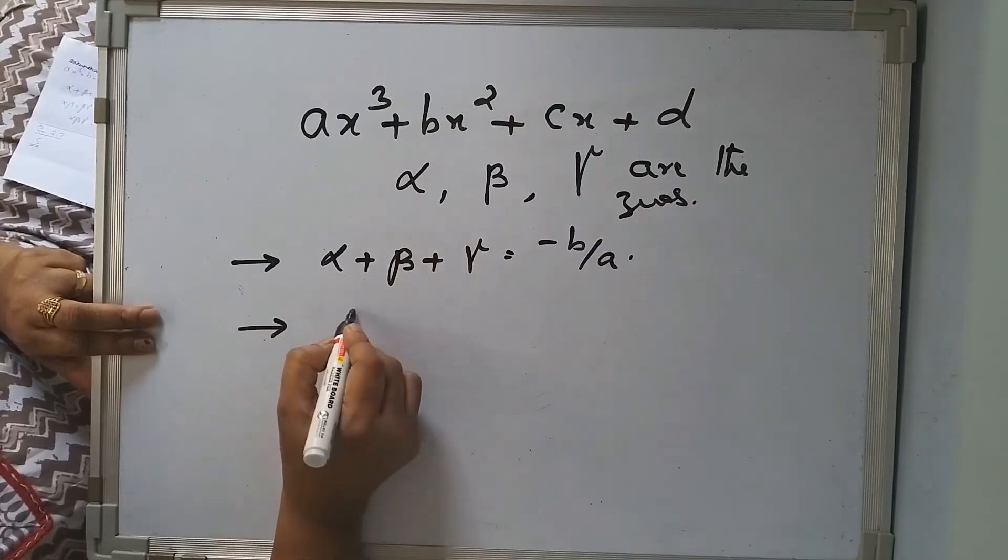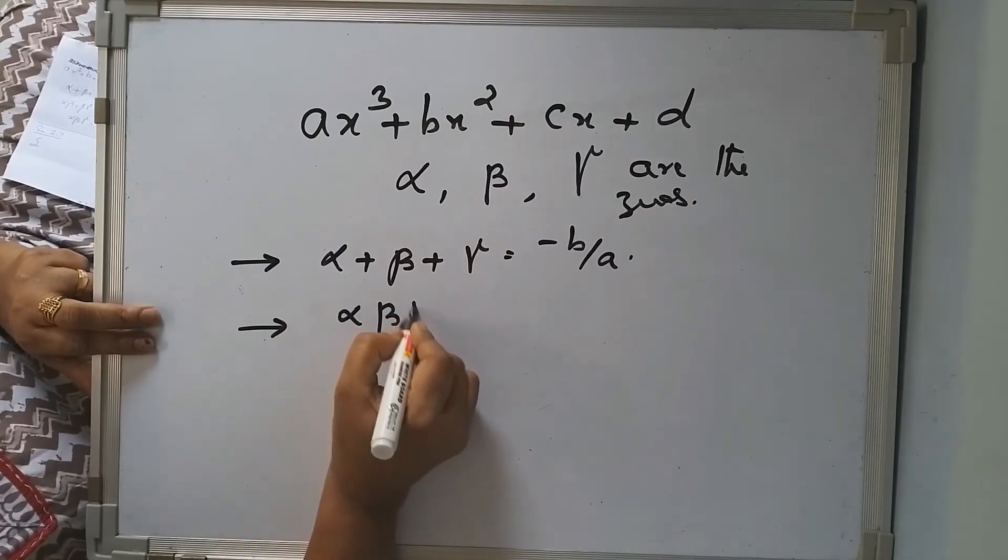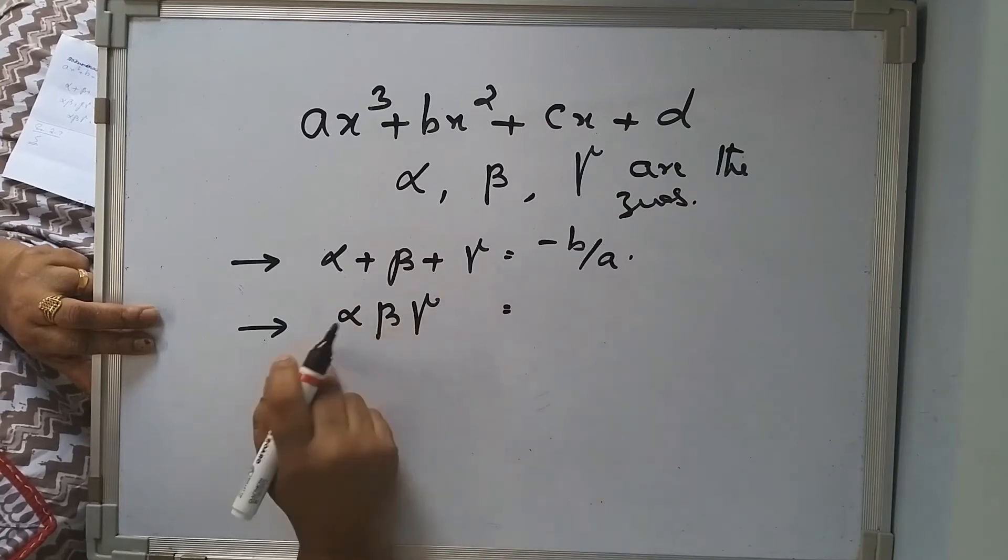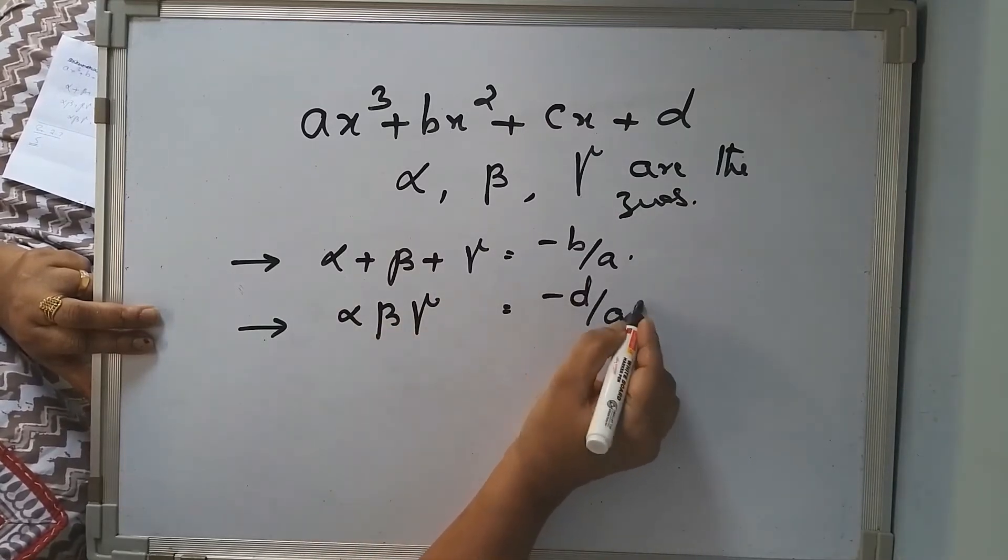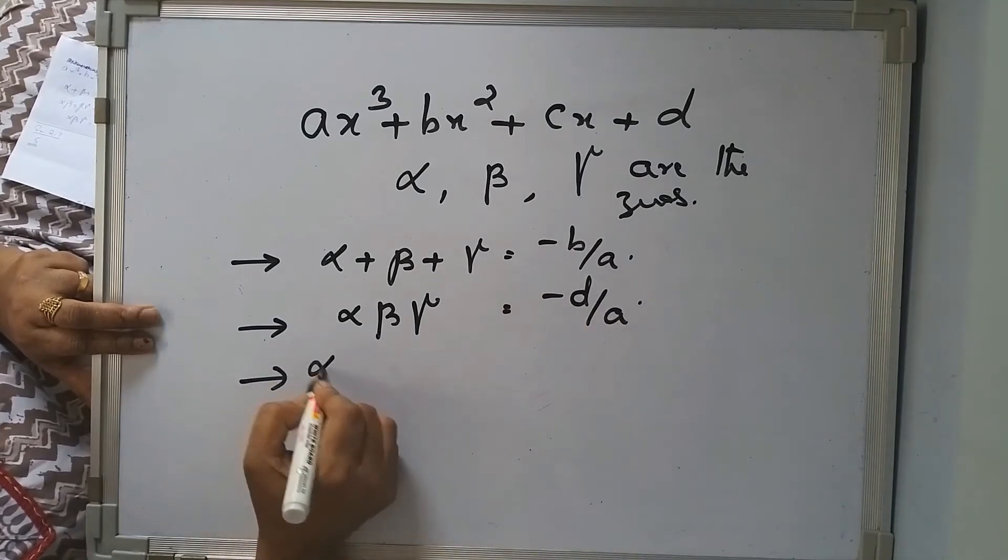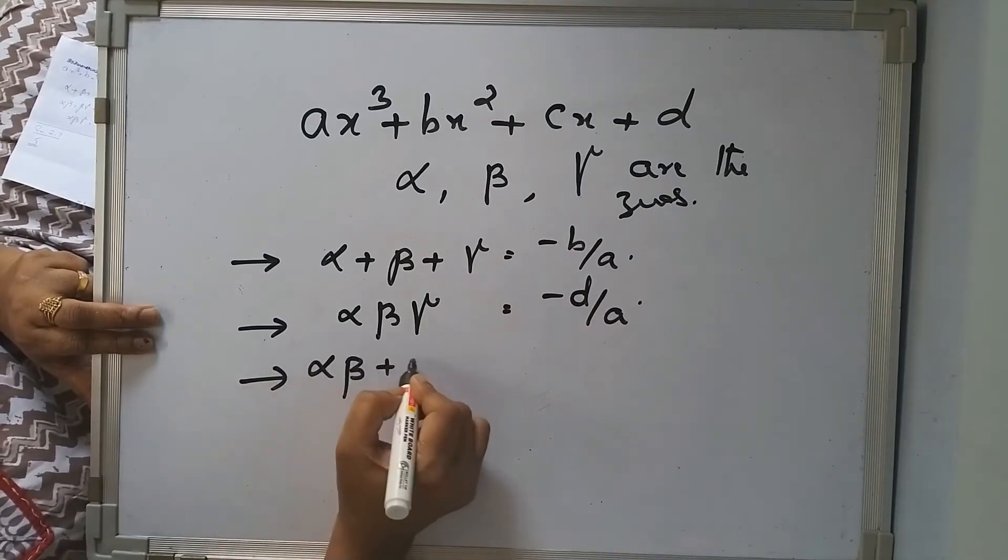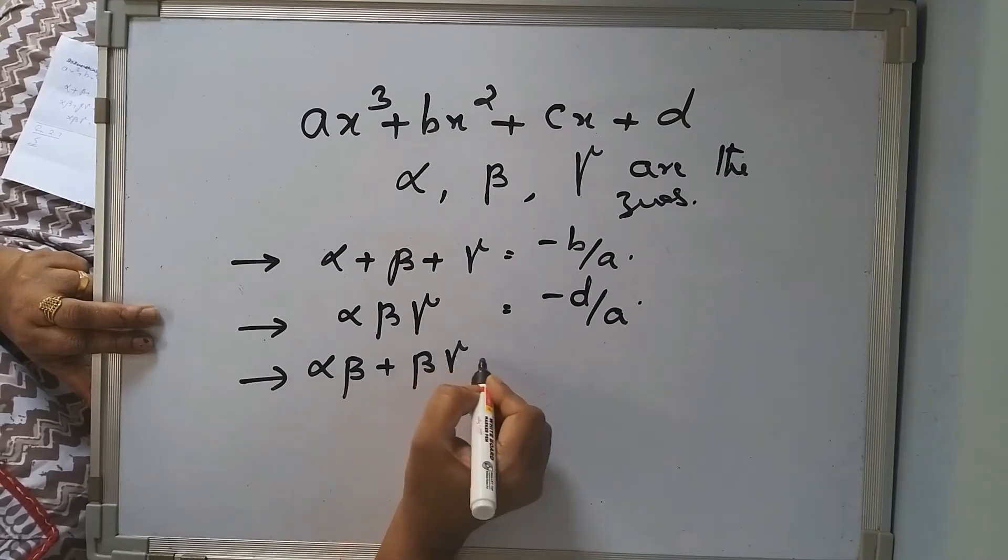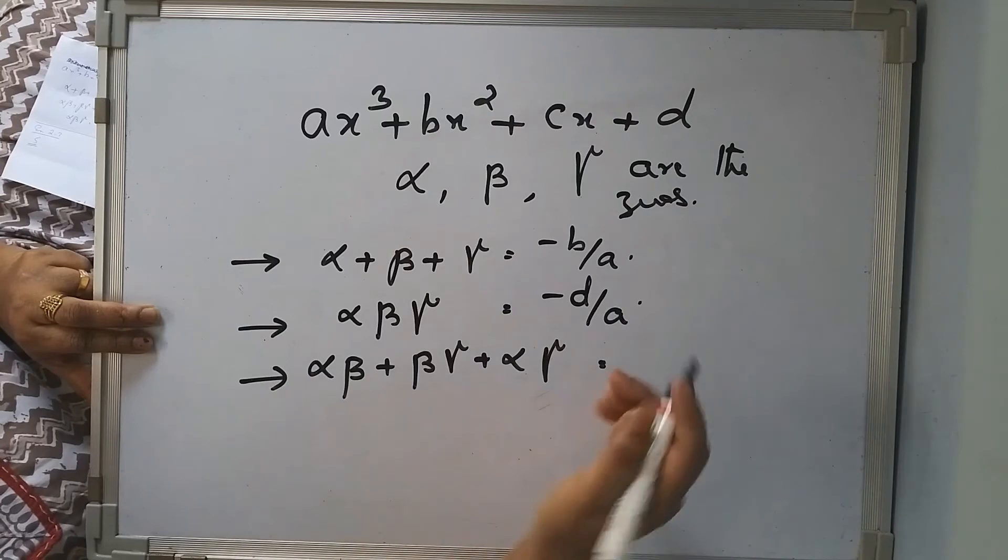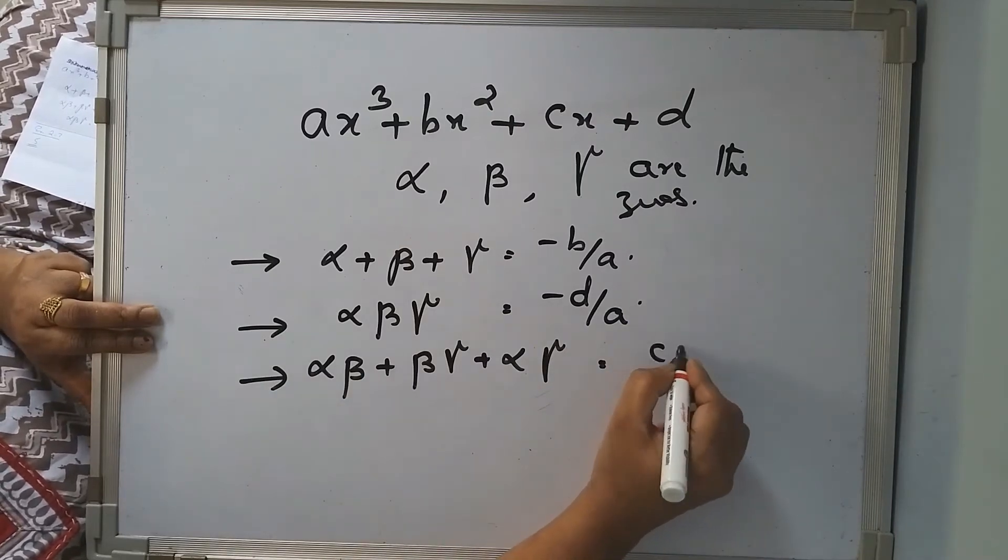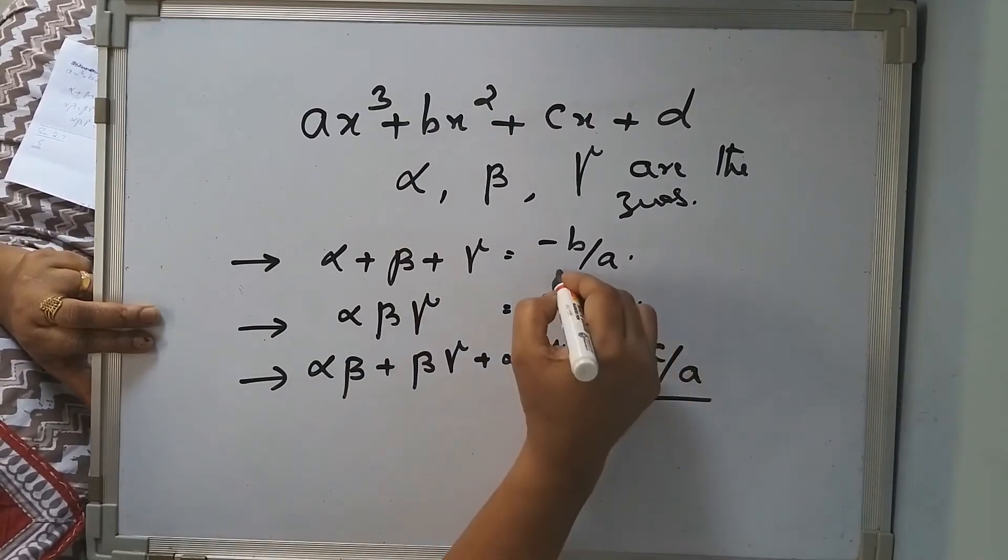Next is alpha, beta, gamma, that is product of the zeros is minus d upon a. And one more: alpha beta plus beta gamma plus alpha gamma, that is product of two zeros will be c upon a. So please note down this.